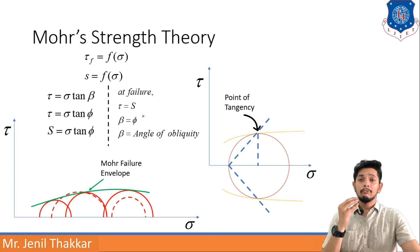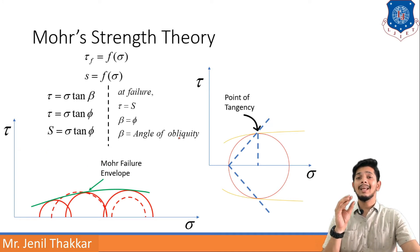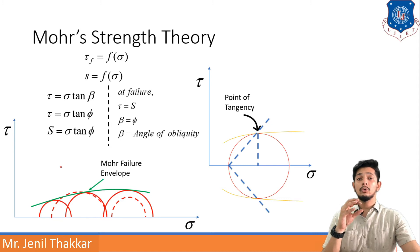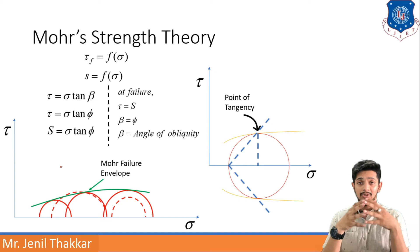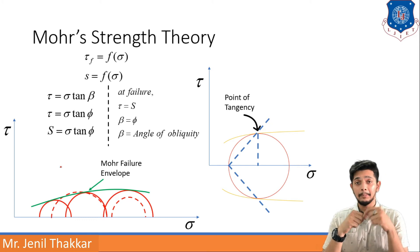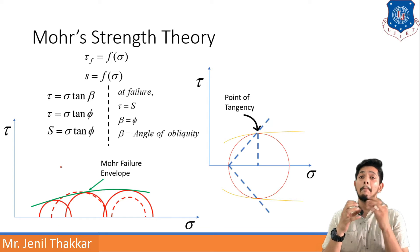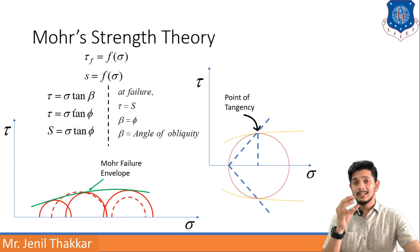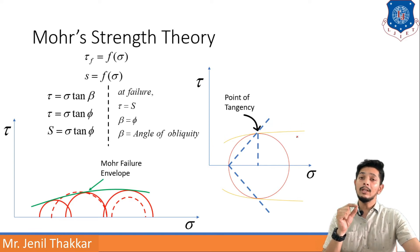Mohr derived formulas from the failure envelope of soils. Looking at two graphs of τ versus σ: in the first graph, you can see a number of Mohr's circles, and the green line shows Mohr's failure envelope. Many soil types are tested under pressure until failure, and one failure envelope is prepared from that, from which Mohr's Strength Theory is derived. The second graph shows the point of tangency — the point where Mohr's failure envelope touches a Mohr's circle indicates failure of that particular soil.